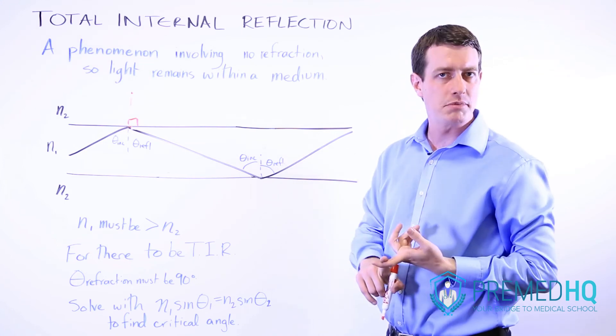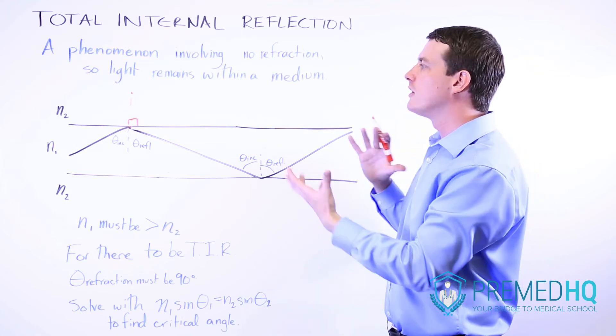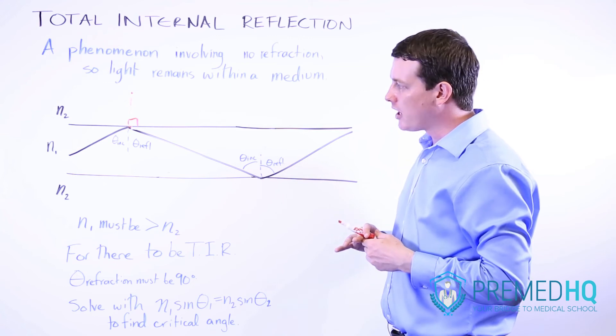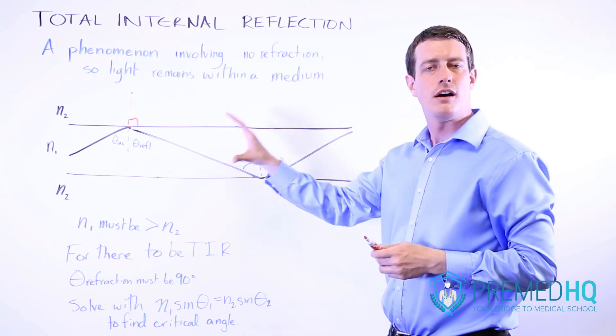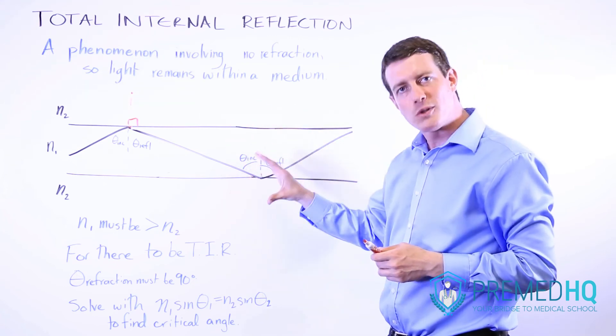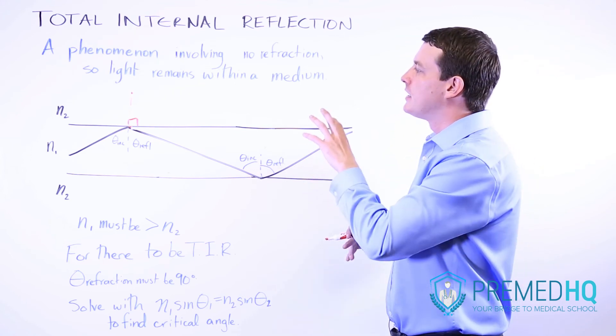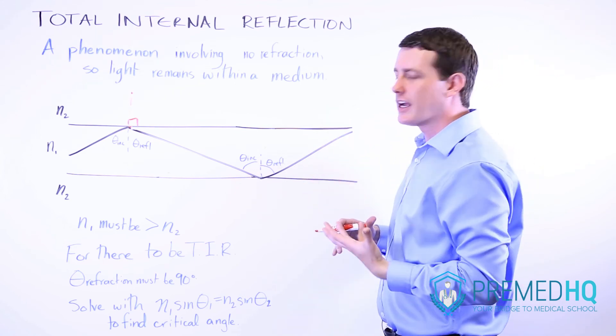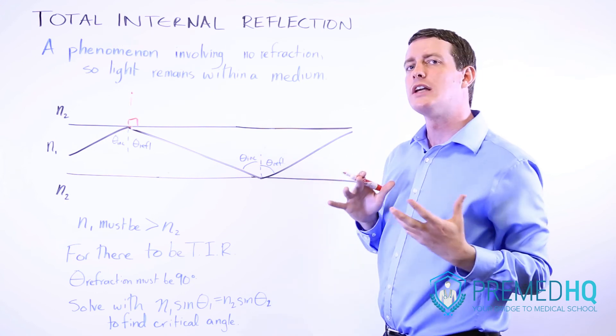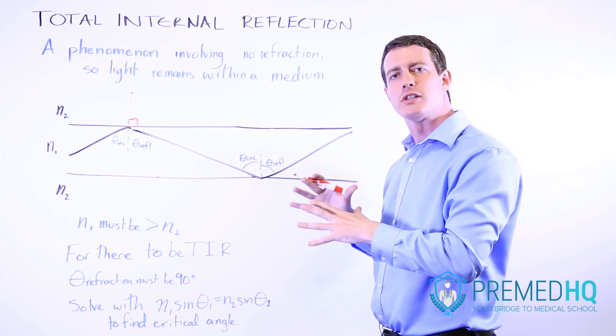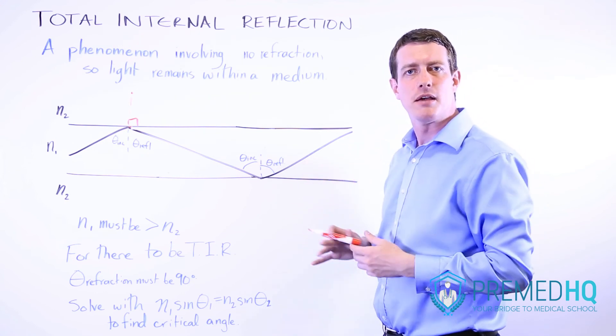You might see this with fiber optic cables or various other applications. But the bottom line is it's a simple Snell's law application. But the only thing is that the angle of refraction has to be 90 degrees or greater, which means that light does not actually refract and doesn't escape that medium.